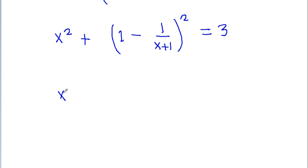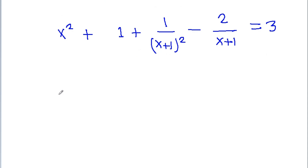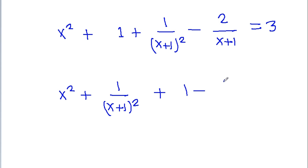And now we can get x squared plus here we get 1 plus 1 by x plus 1 whole square minus 2 by x plus 1 is equal to 3, or it is x squared plus 1 by x plus 1 whole square minus 1 minus 2 by x plus 1.